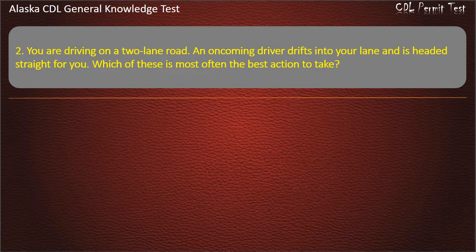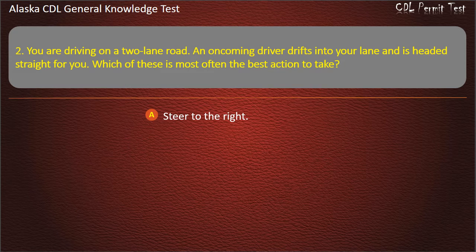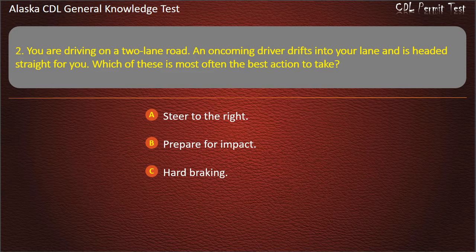Question 2. You are driving on a 2-lane road. An oncoming driver drifts into your lane and is headed straight for you. Which of these is most often the best action to take? Steer to the right, prepare for impact, or hard braking. Answer: Steer to the right.